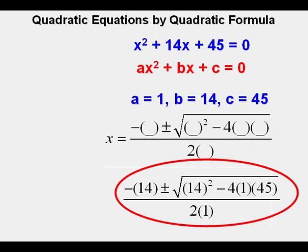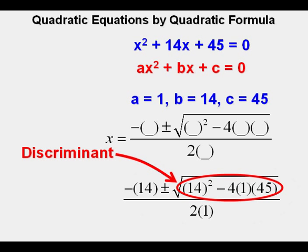With all the numbers in place, this is what it looks like. The first thing to look at is the number under the square root sign, or radical. This is called the discriminant.